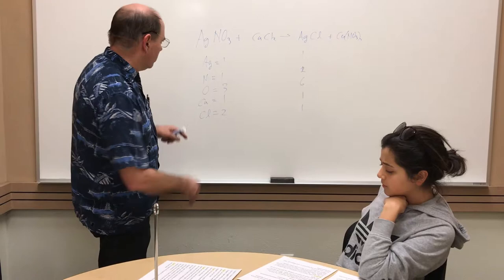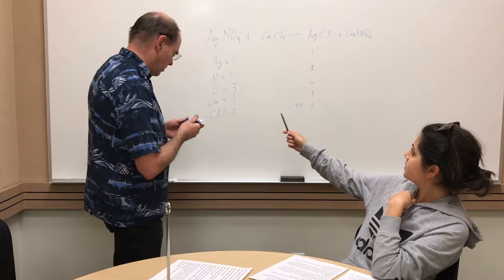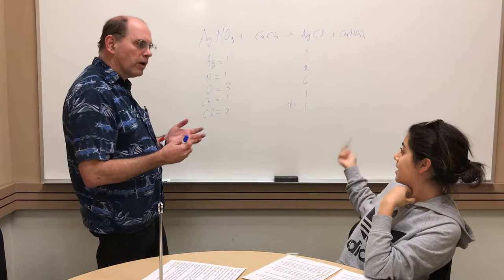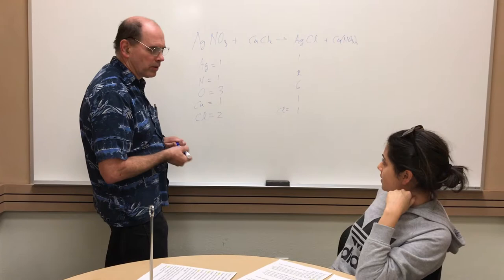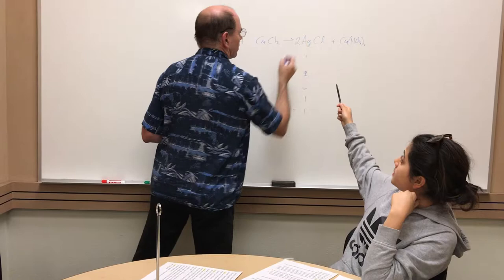So, okay. And what seems to be the problem? So here I see two chlorines on the left side, the reactant side, but I see one chlorine on the product. So that can be a problem. Okay. So how would we fix this? Maybe we need to put two in front of it, in front of the silver. Okay, sure.